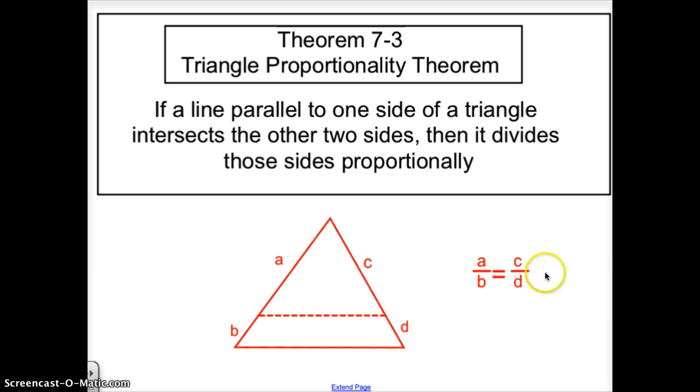Triangle proportionality theorem just states that if a line parallel to one side of a triangle intersects the other two sides, then it divides the triangle and the sides proportionally, making AB proportional to CD.